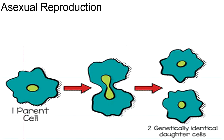Asexual reproduction is the production of a new organism from a single parent. It produces offspring that has the same genetic information as the parent — basically a copy of the parent. Since no male and female sex cells are combined, there is only one parent involved, and genetic information from that parent passes on to the offspring, making it identical to the original parent.